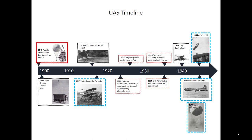The earliest recorded use of an unmanned aerial vehicle for war was in 1849, when the Austrians attacked the Italian city of Venice with unmanned balloons loaded with bombs. Once positioned over the town, they were dropped electrically using a long copper wire attached to a large battery. The bomb then fell and exploded on contact with the ground. Although some of the balloons worked and successfully managed to bomb Venice, others were caught by a change of wind and were blown back over Austrian lines.